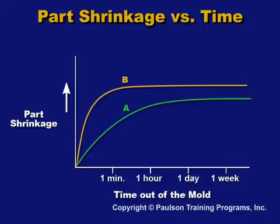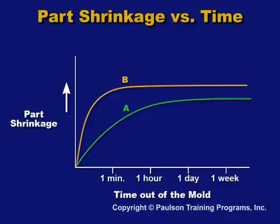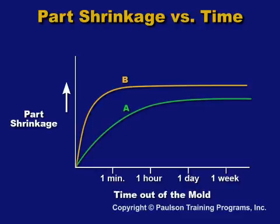If the shrinkage is uneven, the part will likely warp. The same part, B, was cooled in a warmer mold, so the oriented molecules had more time to relax. Most of the shrinkage occurred quickly. A warmer mold temperature resulted in more initial shrinkage and less long-term shrinkage. The temperature of the mold is the most important condition affecting internal stress in the finished parts.